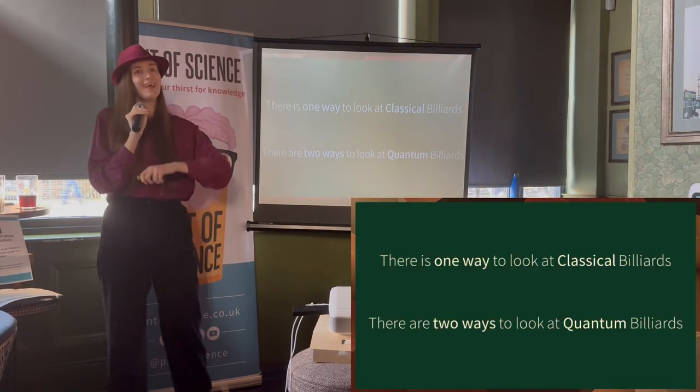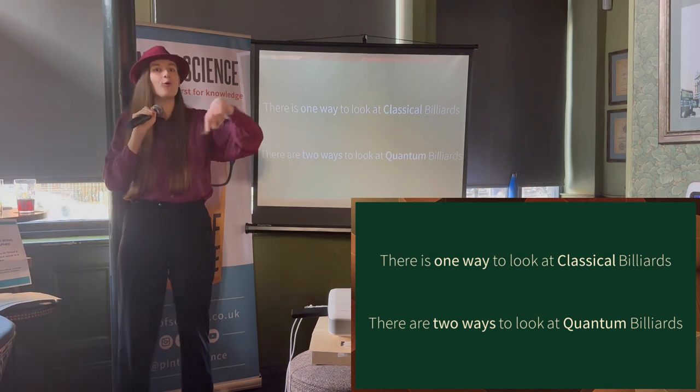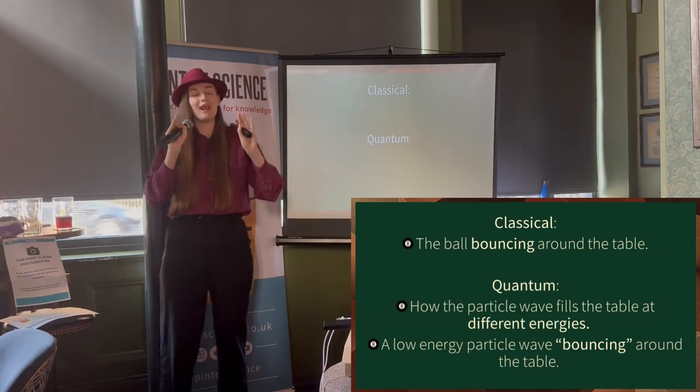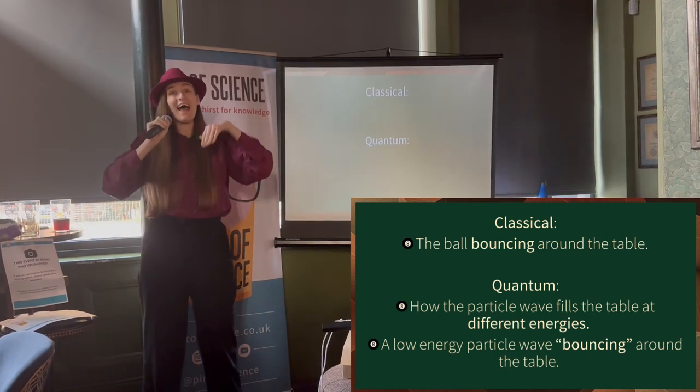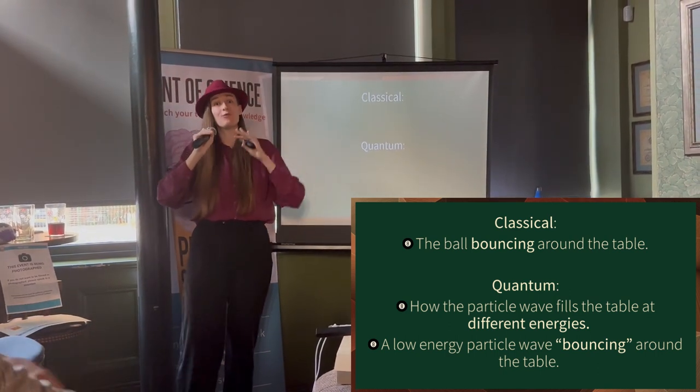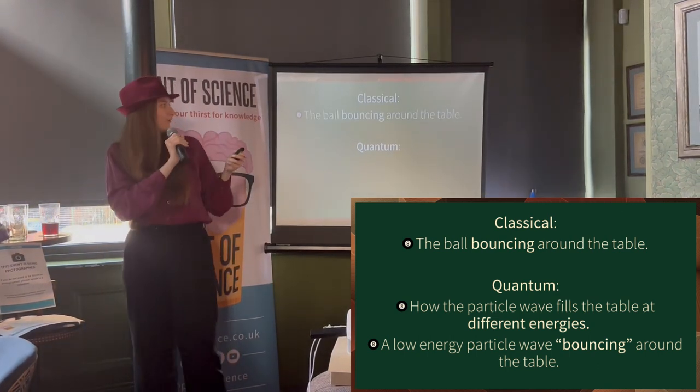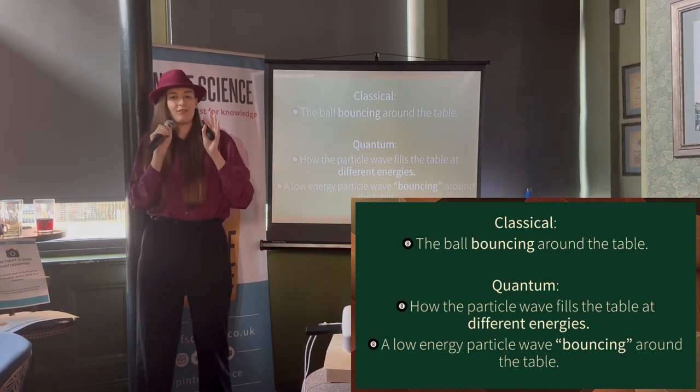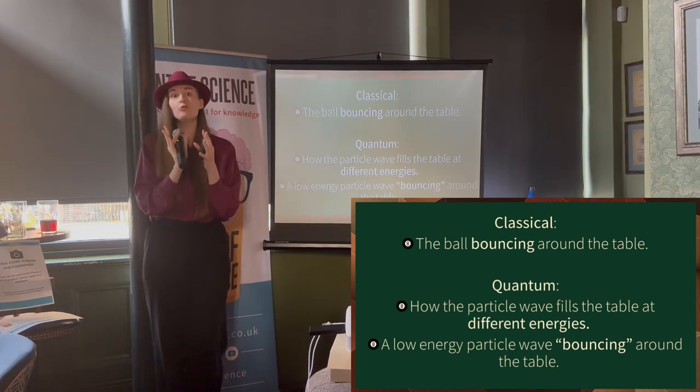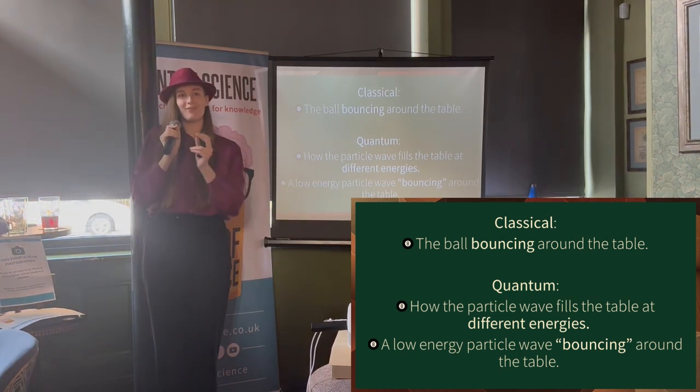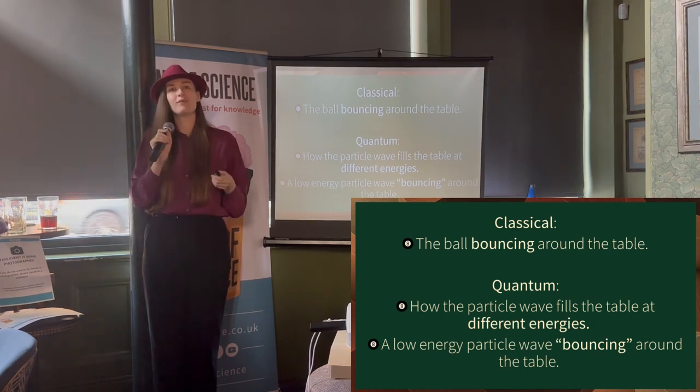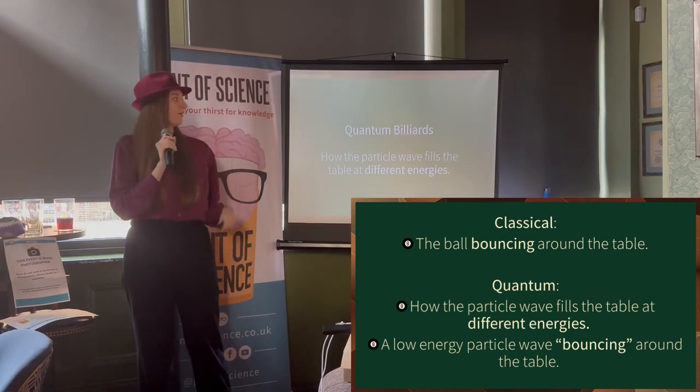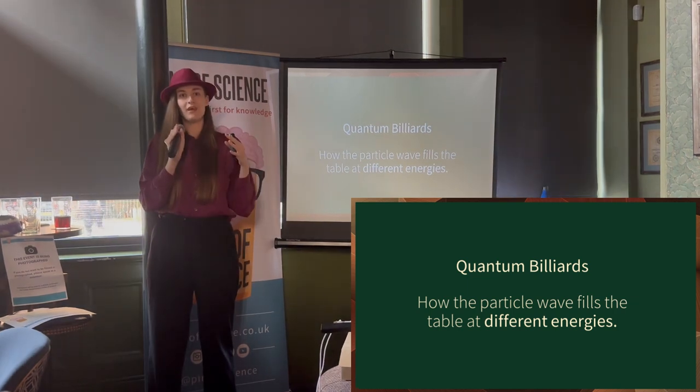So in billiards, there's one way that we tend to look at classical billiards. And that's how the ball bounces on the table. But quantum mechanics is a bit more interesting. There's actually two ways we can look at quantum billiards. The first is looking at photos of a particle wave at different energies, different quantum of energy. And the second is what if we construct the particle wave, we choose what it's going to be, and then we put it on a bigger billiard and we let it bounce around. And that's quite similar to classical billiards as we get to look at how it bounces. And that's dynamics.